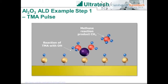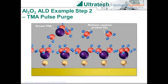A methane reaction byproduct is released. The TMA pulse should be of sufficiently large dose to react with as many available hydroxyl groups as possible. Because excess TMA will not react with the TMA molecules already chemisorbed to the surface, the process is self-limiting. This self-limiting behavior is what gives ALD many of its excellent coating characteristics, such as very high uniformity, large process window, and the ability to coat high aspect ratio features. Any excess TMA and reaction byproducts are carried away with the flowing inert gas and exhausted from the system.